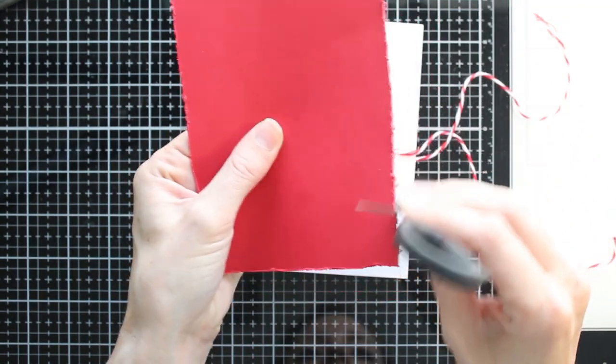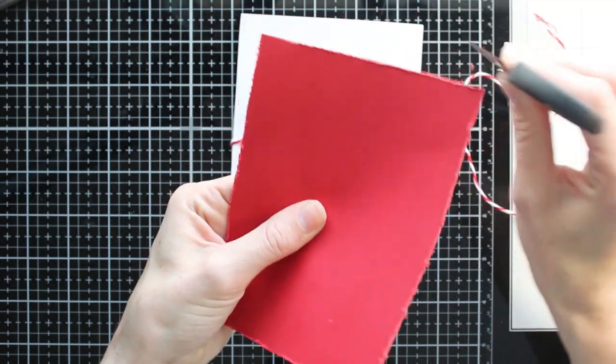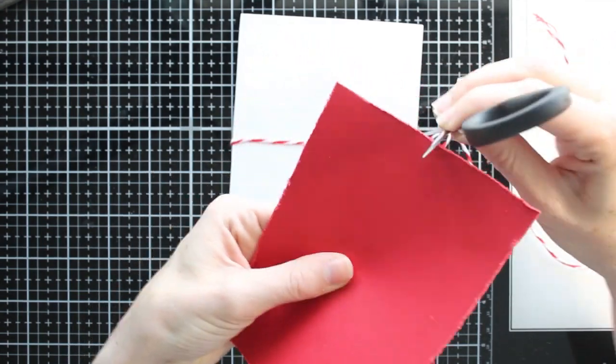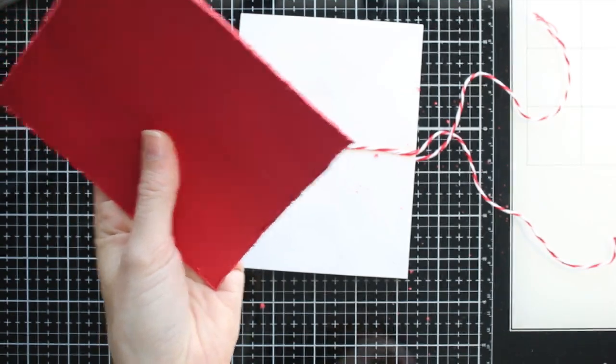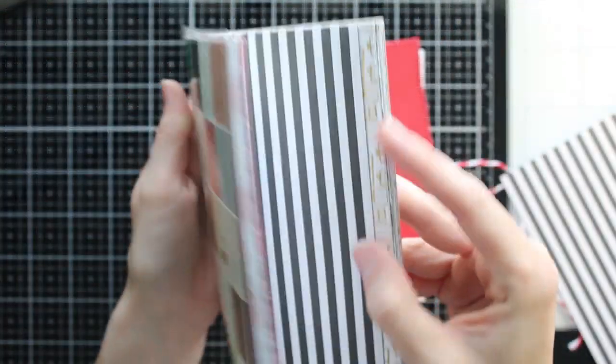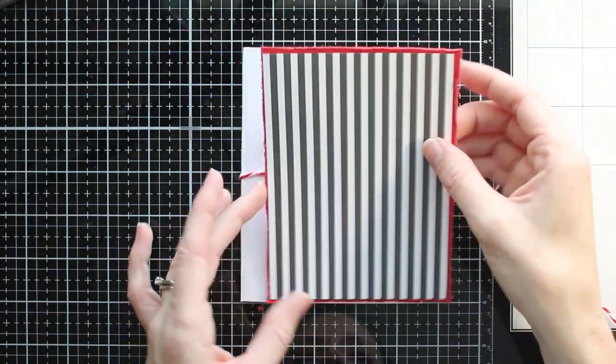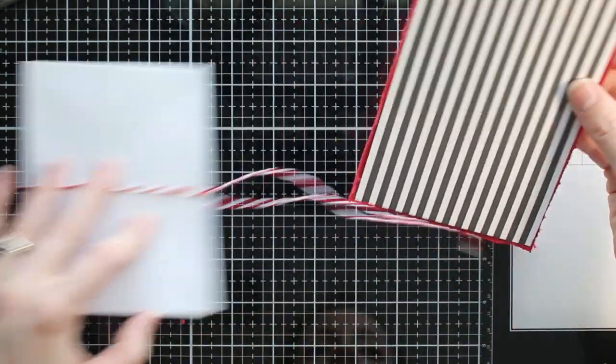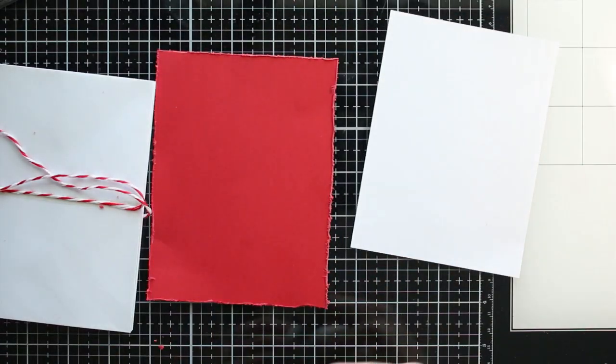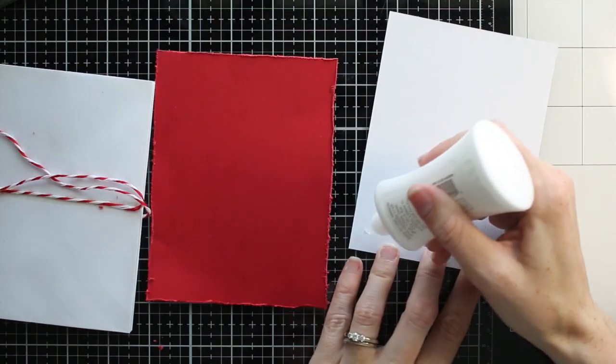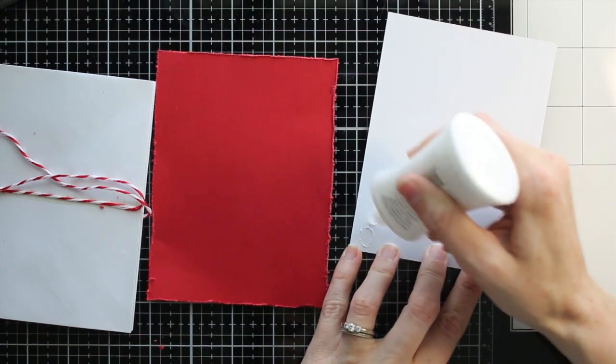So I took some of this red cardstock, cut it down to layer on the front. As you can see here, I just took my scissors and I roughed up the edges. I kind of like that worn kind of look for albums. I'm going to go through my pattern papers now, and I picked out this black stripe pattern. I'm going to put this on the front. Now I'm layering these together. I'm just going to go ahead and glue my pattern paper down to my red cardstock.